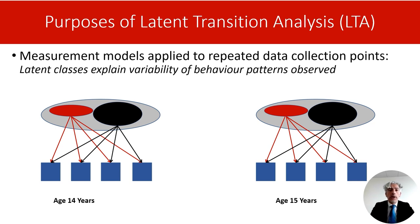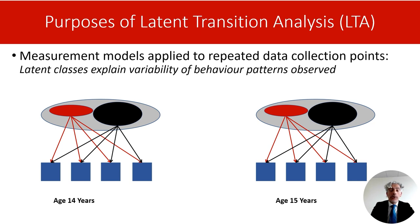At each time point, we want to identify the groups or classes that can adequately explain the differences in behavior we observe across participants. In this example, I am assuming that at each age there are two underlying groups of adolescents — for example, users and abstainers. This is the measurement model I specify for the data, and the basic measurement model assumes that there are different typologies of individuals at each age, and those differences between individuals explain the different patterns of behavior we observe.